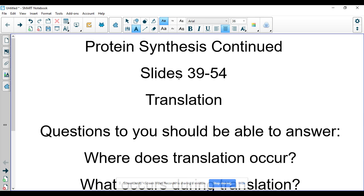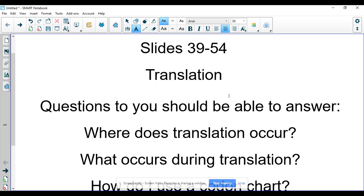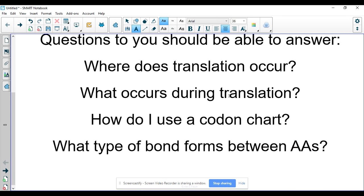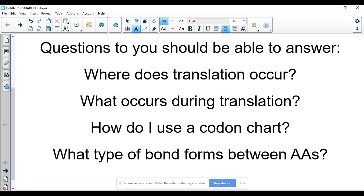This is going to go through slides 39 through 54. You should be able to answer these questions: Where does translation occur? What occurs during translation? How do I use a codon chart? And what type of bond forms between amino acids?